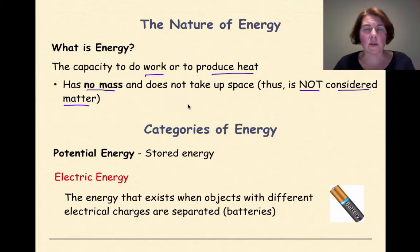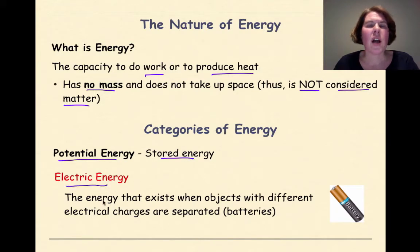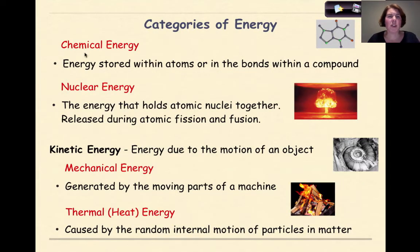Matter has mass and volume; energy has no mass and does not take up any space — these are two very different things. There are two basic categories of energy. The first is potential energy, which we refer to as stored energy. One type of potential energy is electric energy, the energy that exists when objects with different electrical charges are separated. A good example is a battery. Another type of potential energy is chemical energy, the energy stored within atoms or in the bonds within a compound.